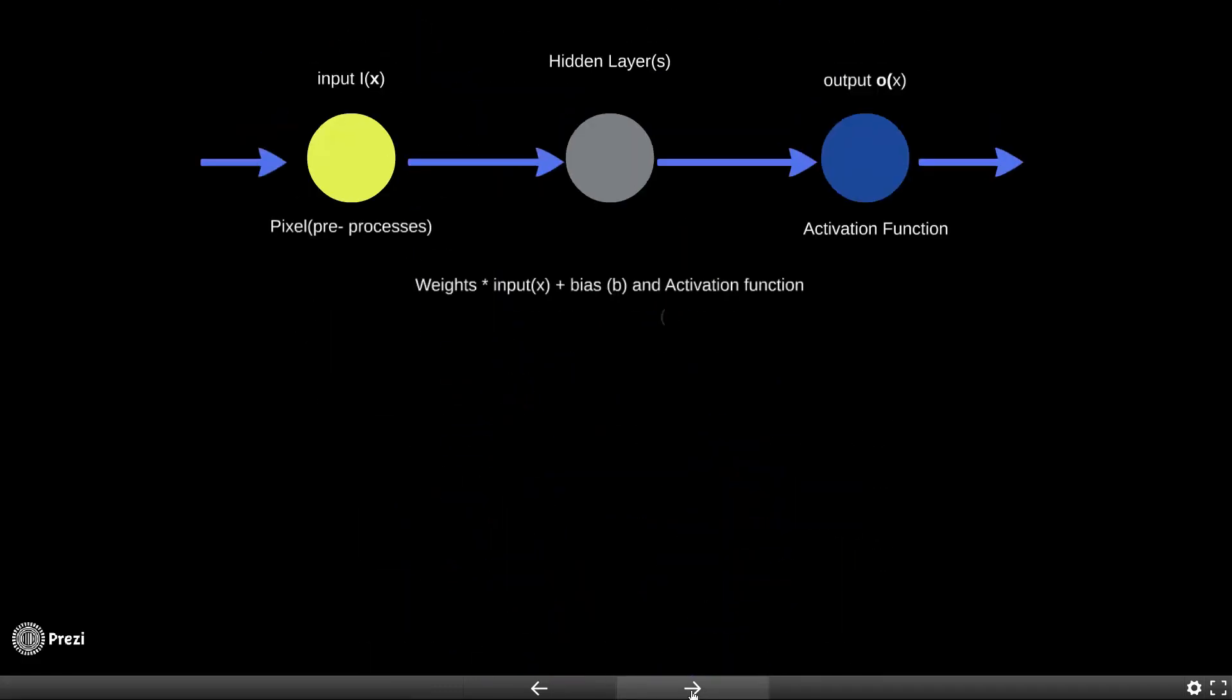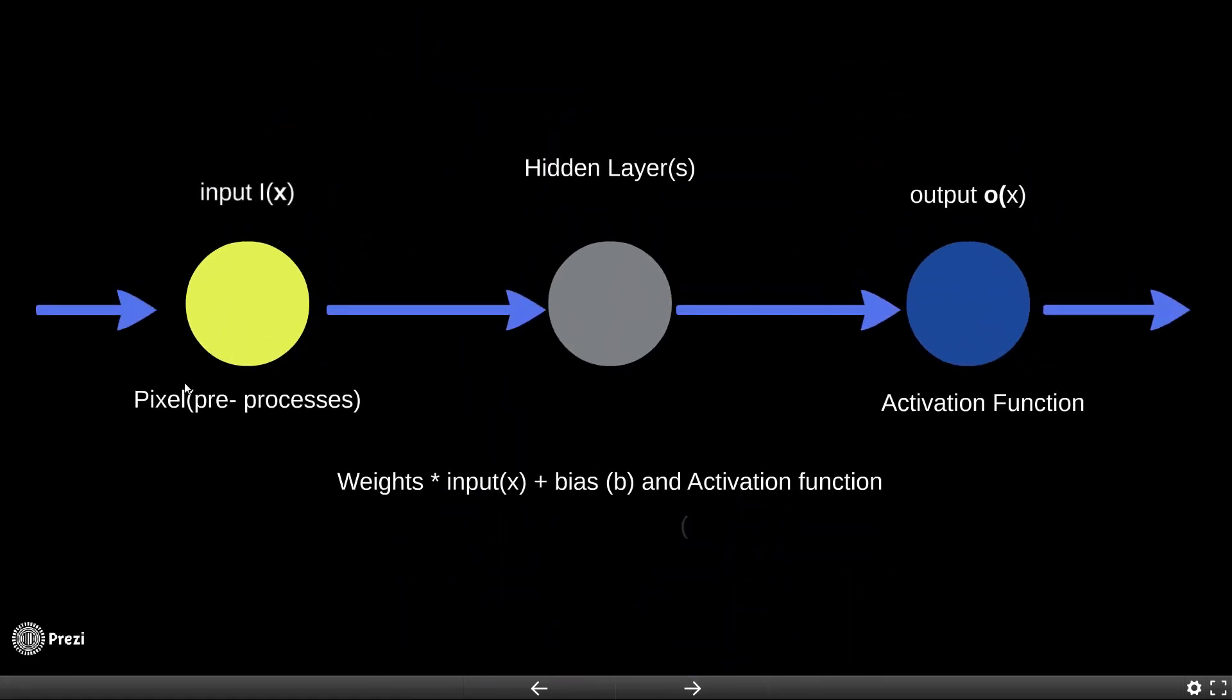What we have here is one single input node, one neuron, and one output node. The input takes a pixel, does pre-processing to the information, and then passes it to the hidden layer.